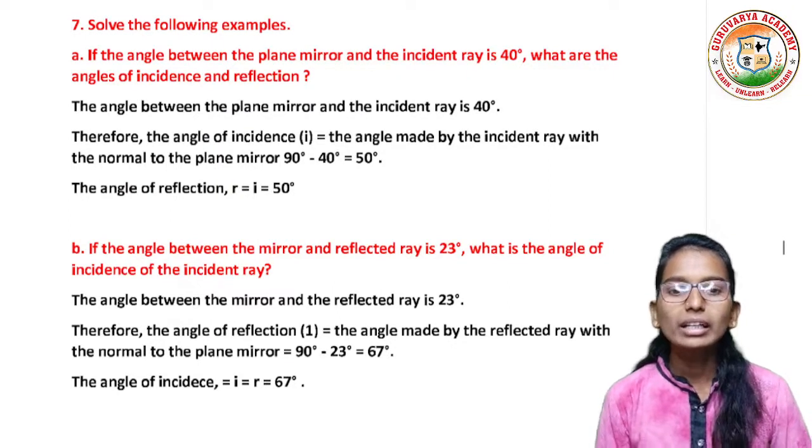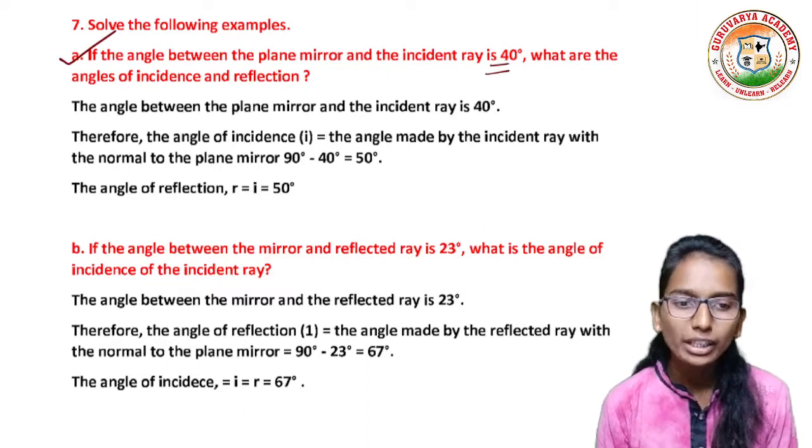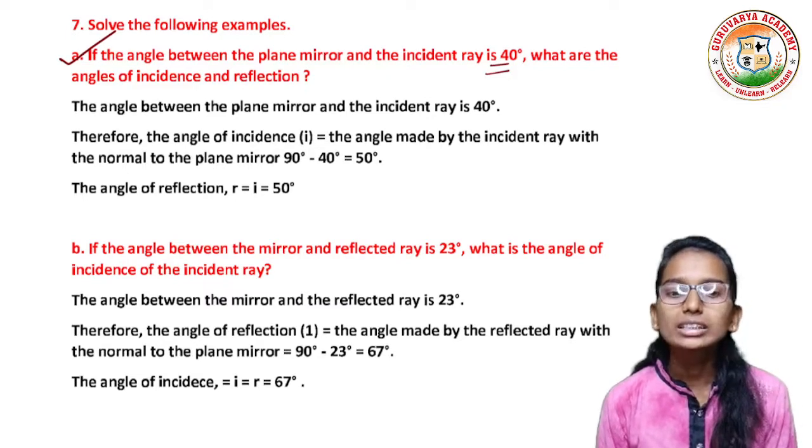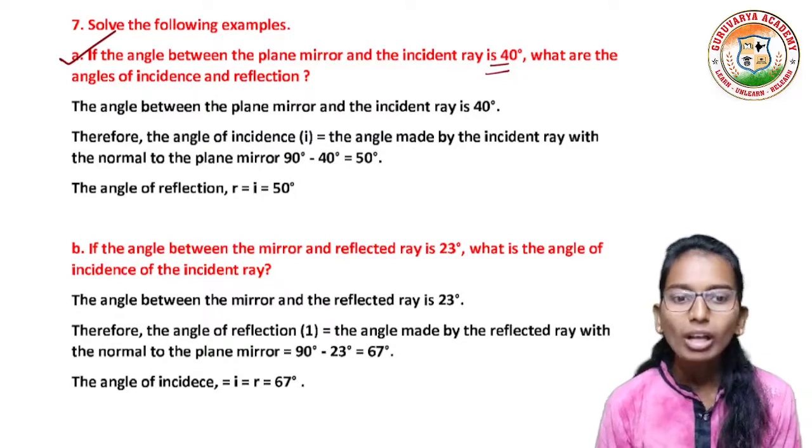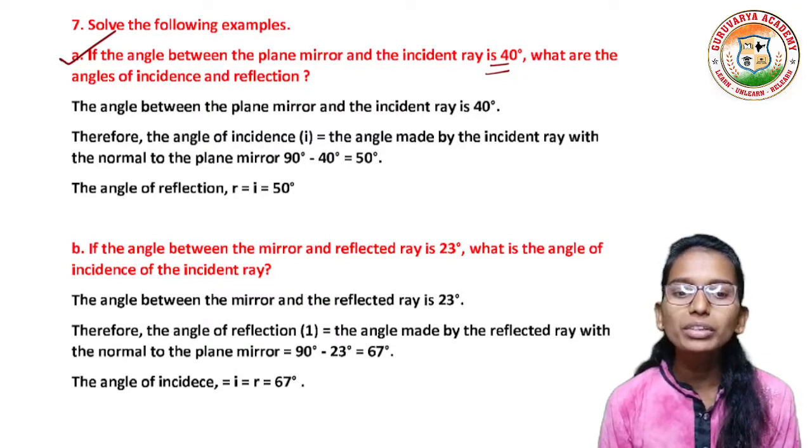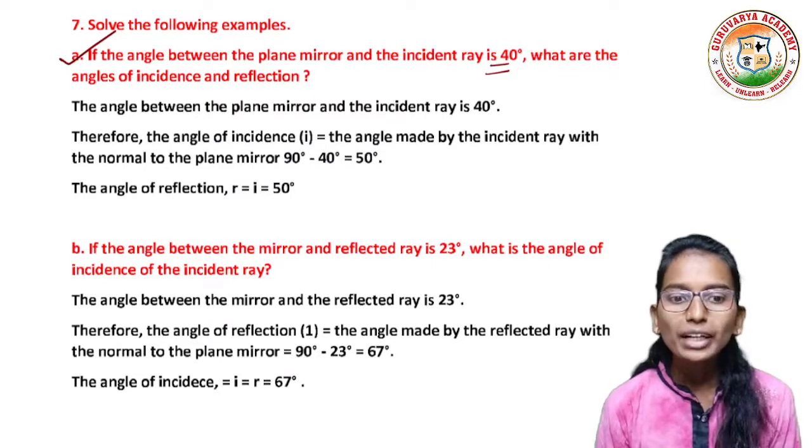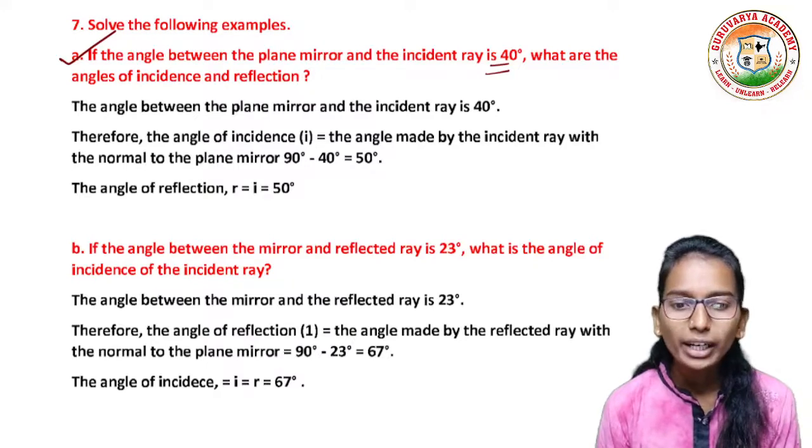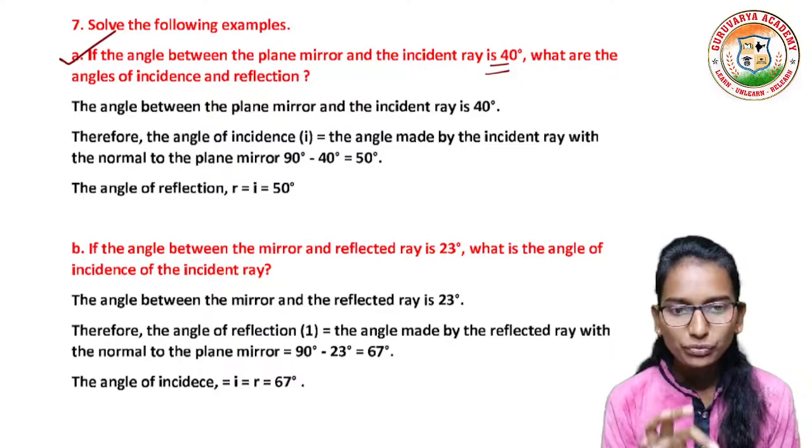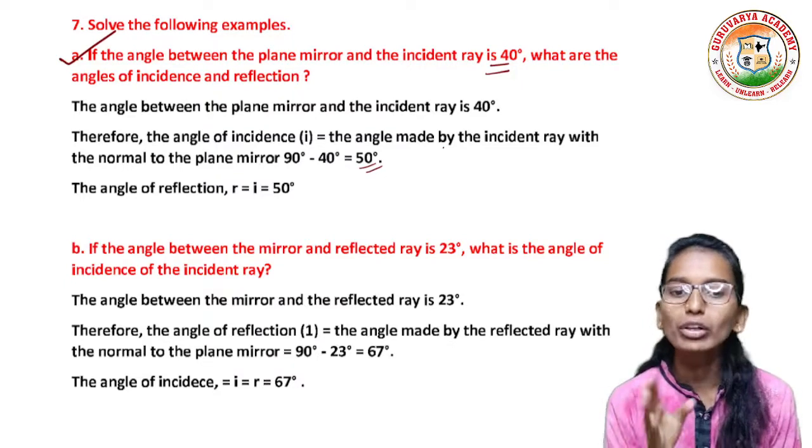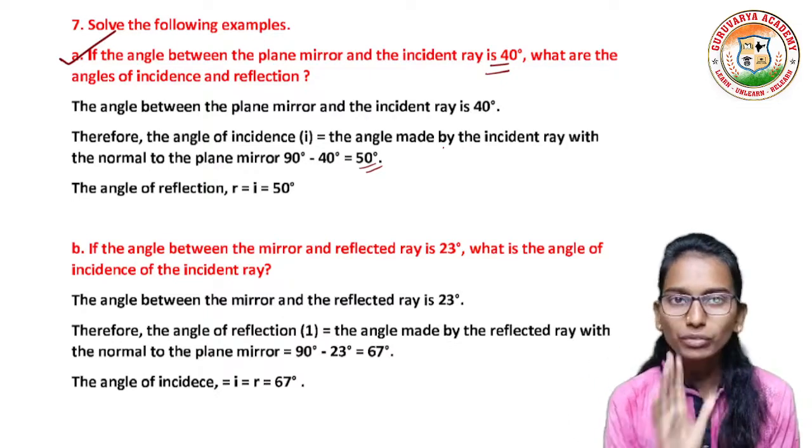The 7th question, part A: if the angle between the plane mirror and incident ray is 40 degrees, what are the angle of incidence and reflection? Answer: the angle between the plane mirror and the incident ray is 40 degrees. Therefore, the angle of incidence, the angle made by incident ray with the normal to the plane mirror, is 90 degrees minus 40, that is equal to 50 degrees. Therefore, the angle of reflection is equal to 50 degrees, because the angle of incidence is equal to the angle of reflection.